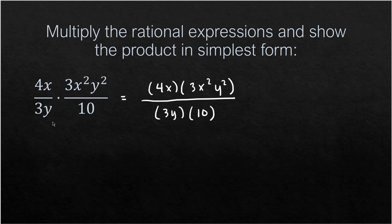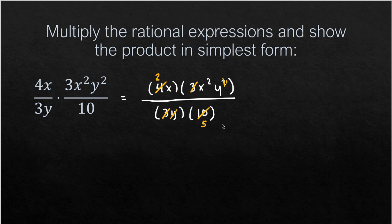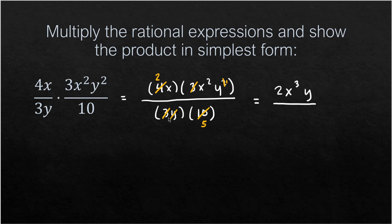Now we cancel common factors. The 3 and 3 cancel. The 4 and 10 share a factor of 2, giving 2 and 5. The y in the denominator cancels with one y from y², leaving y. Multiplying what remains: 2x times x²y = 2x³y in the numerator, and 5 in the denominator. The simplified form is 2x³y/5.